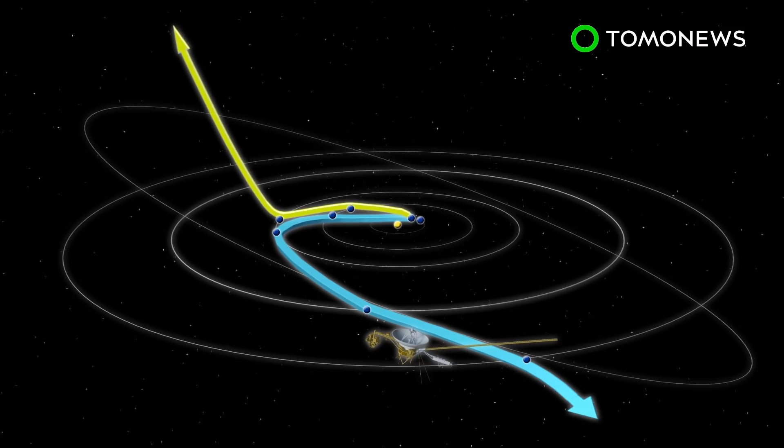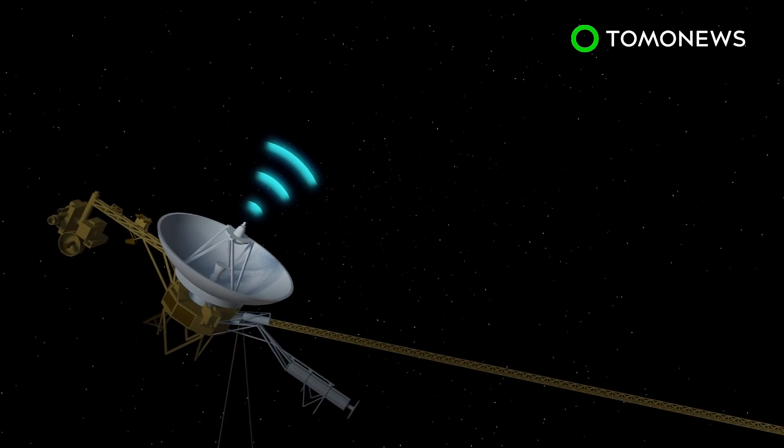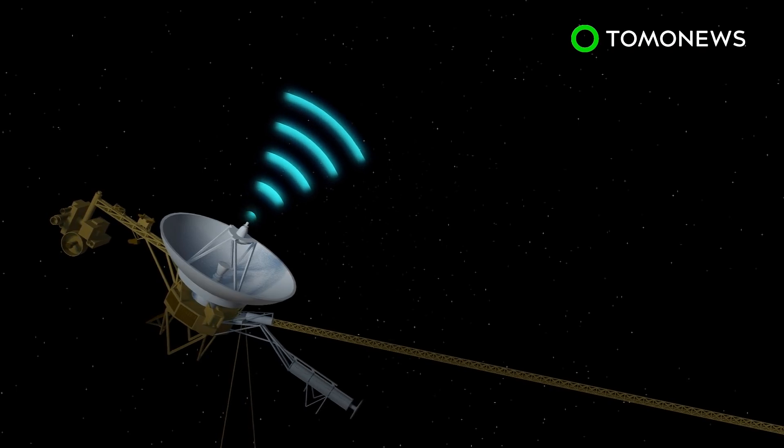Voyager 1 took a shorter but faster trajectory that used a gravity assist maneuver at Saturn to take it out of the solar system. In 2012, Voyager 1 became the first spacecraft to cross into interstellar space.